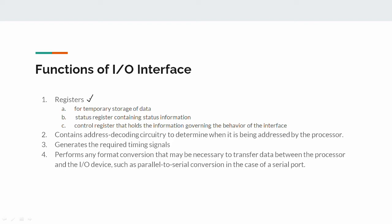The first function involves registers — data register, status register, and control register. These provide temporary buffer storage, current status, and control signals respectively. Second, one specific address is decoded — how to decode the address is part of IO interface functionality. Third, timing signals are generated for synchronization. Fourth, format conversion is performed. So these are the four basic high-level functions.